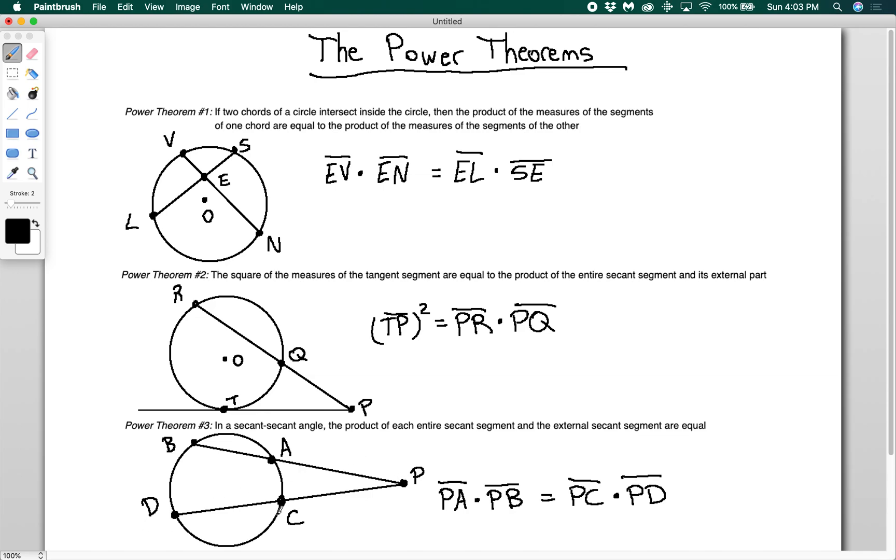So whenever you have a secant segment, you're doing external times entire thing. If it's another secant segment, external times entire thing. Or if it's a tangent segment, then just the tangent segment squared.